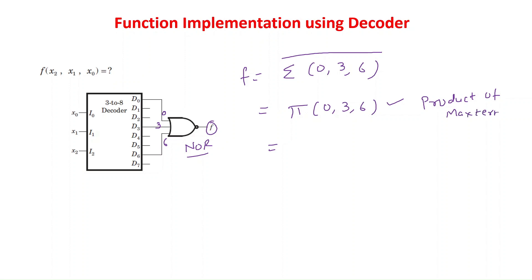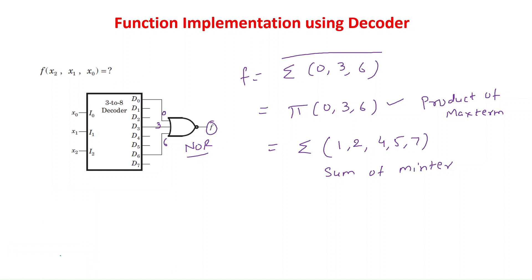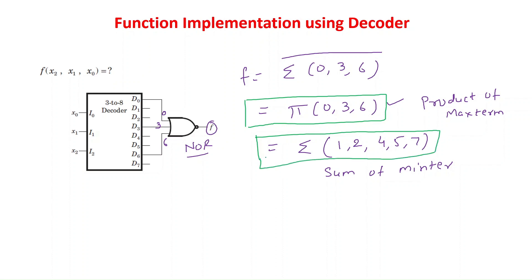The terms missing in the product of max terms will be considered in the sum of min terms. So the terms 1, 2, 4, 5, and 7 form the expression in sum of min terms. We have two answers for this question: one is product of max terms pi(0, 3, 6), and another is sum of min terms sigma(1, 2, 4, 5, 7). One function is expressed as product of max terms, the other as sum of min terms — both represent the same circuit.